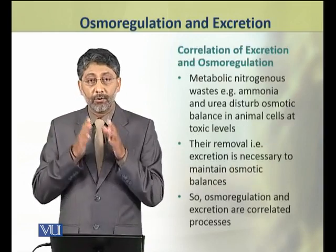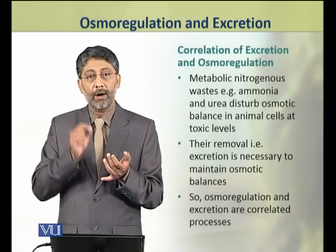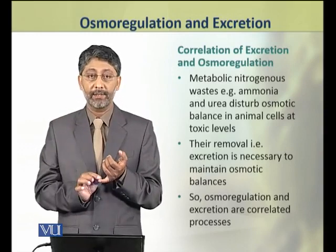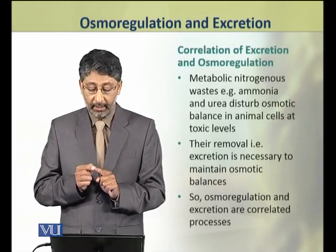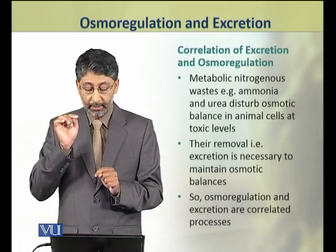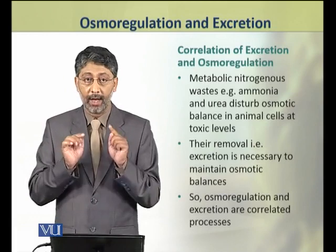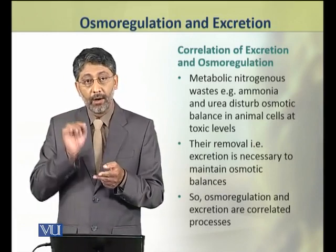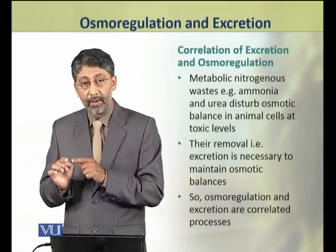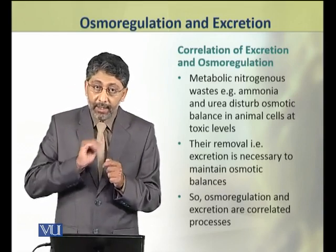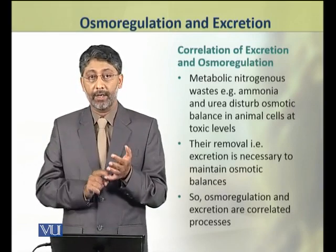These metabolic nitrogenous wastes — for example ammonia and urea — disturb the osmotic balance in animal cells at toxic levels. That is why excretion and osmotic balance are correlated processes.